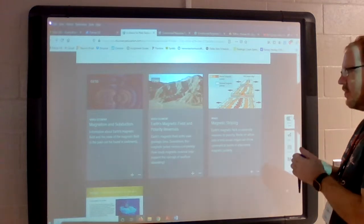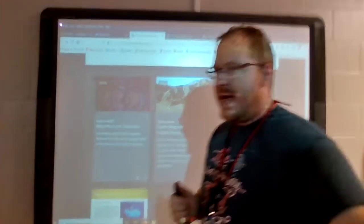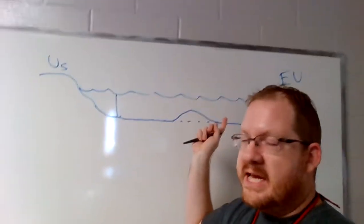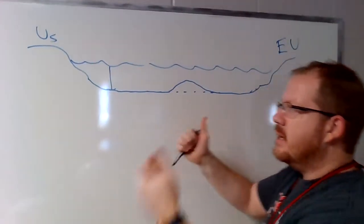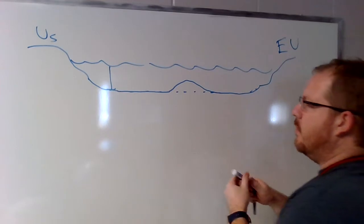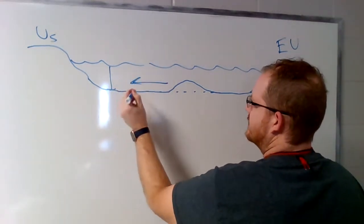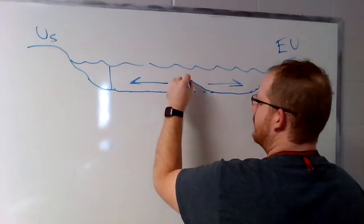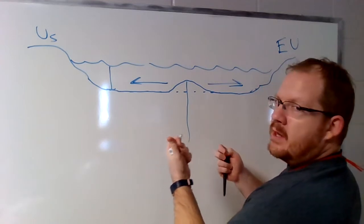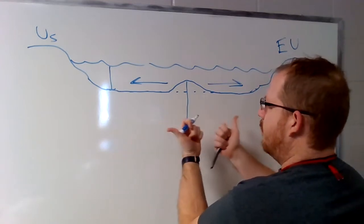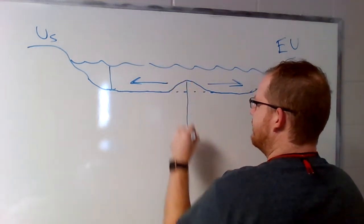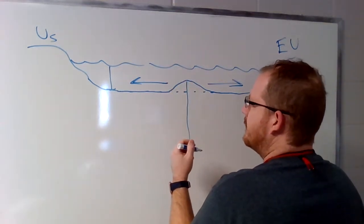What they discovered is that the United States and Europe are getting further and further apart every single year — they're spreading more and more. This part of the ocean is moving to the left, this part to the right. That mountain range corresponds to the splitting point where they're cracking open and each side is moving away, with the mountain range right in the center.